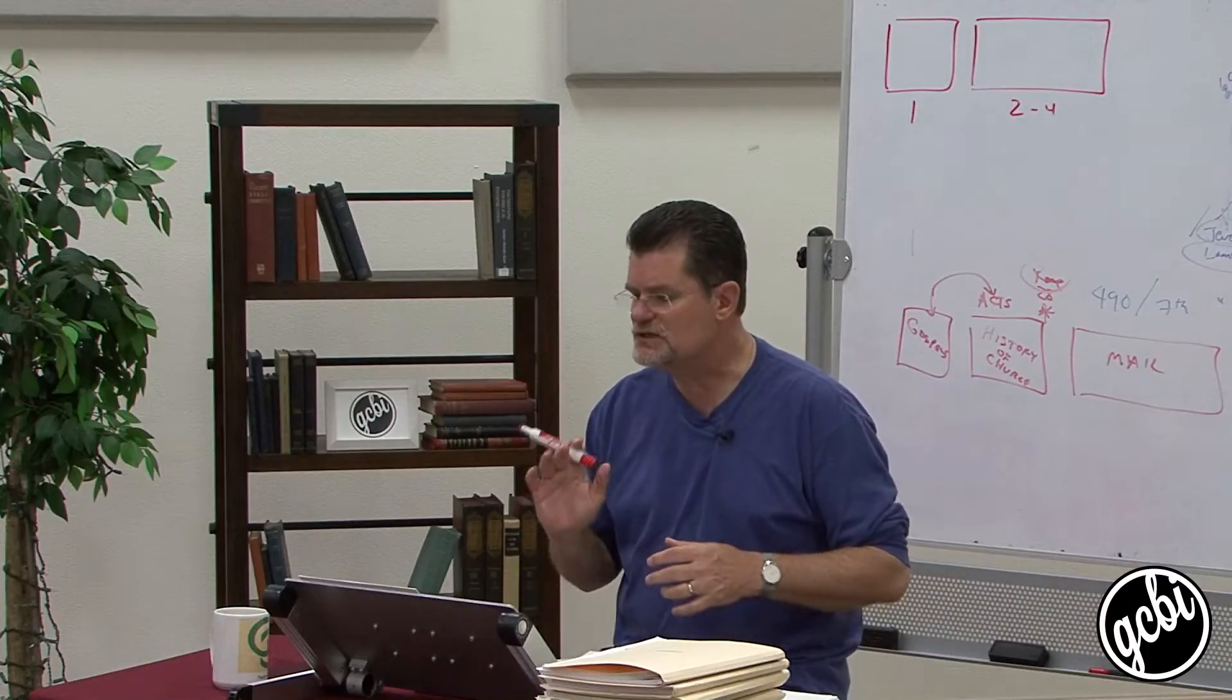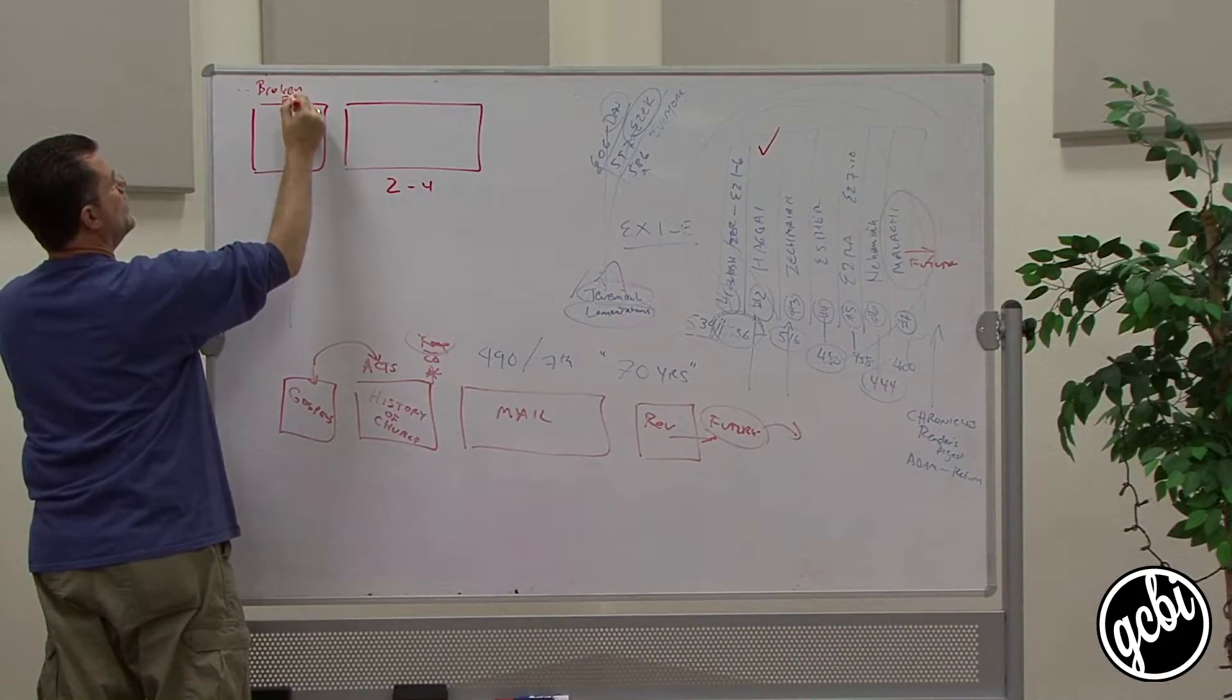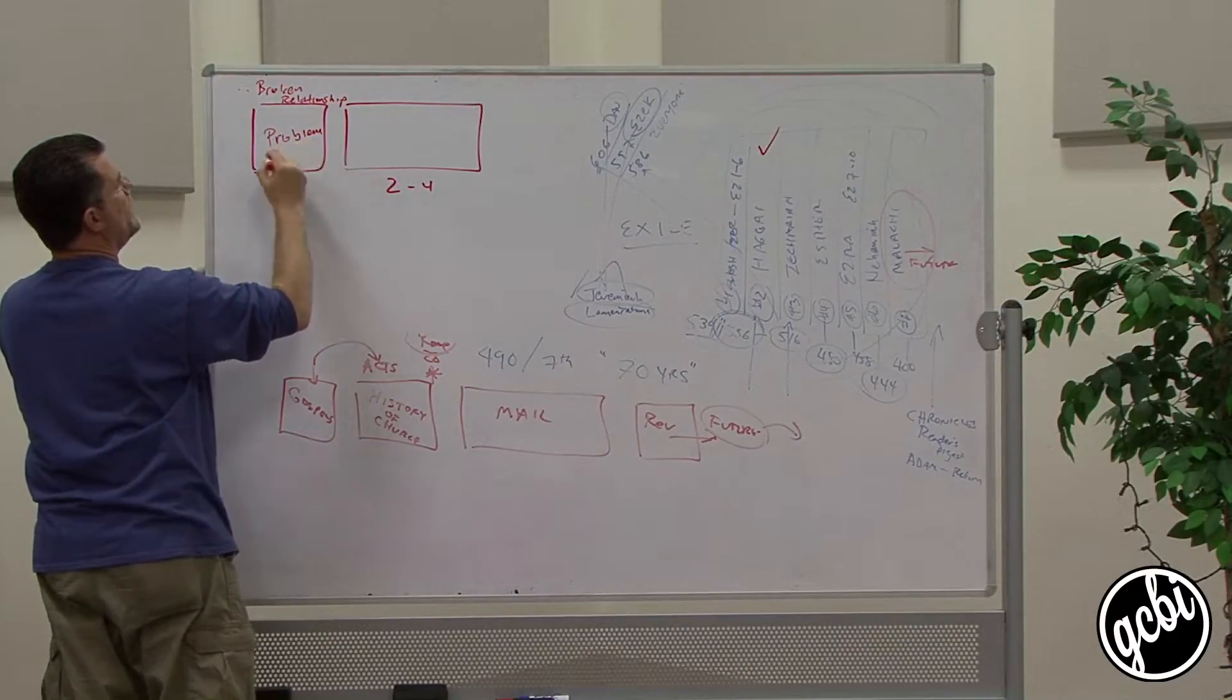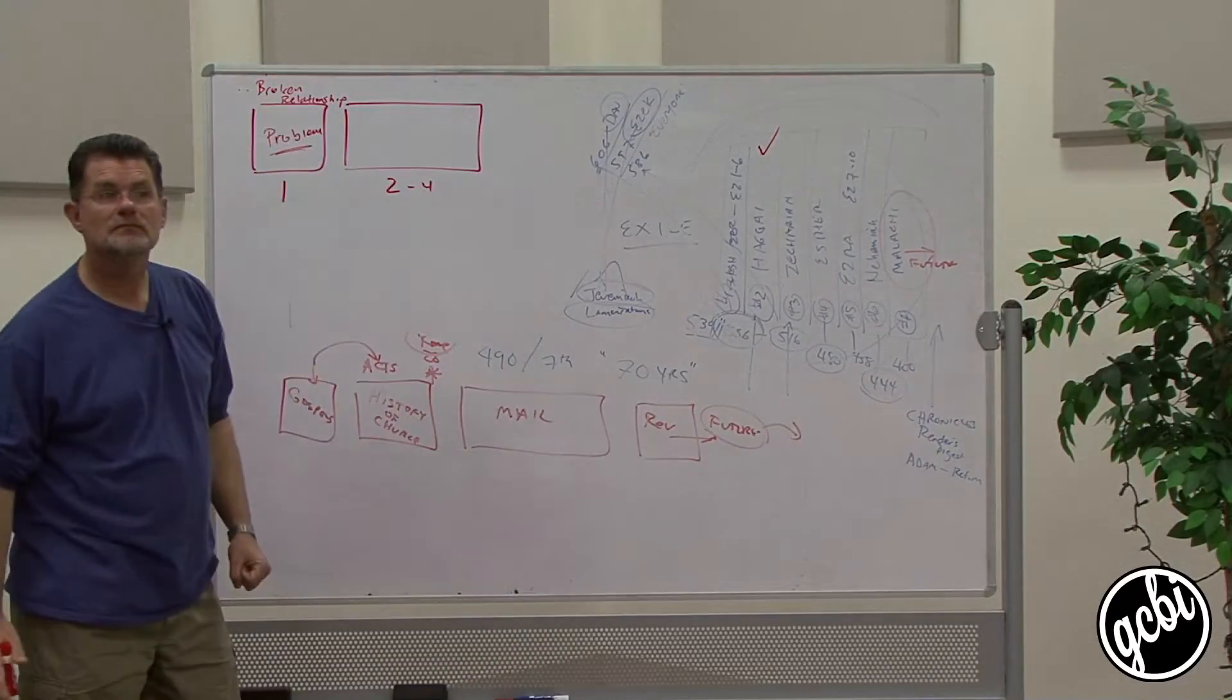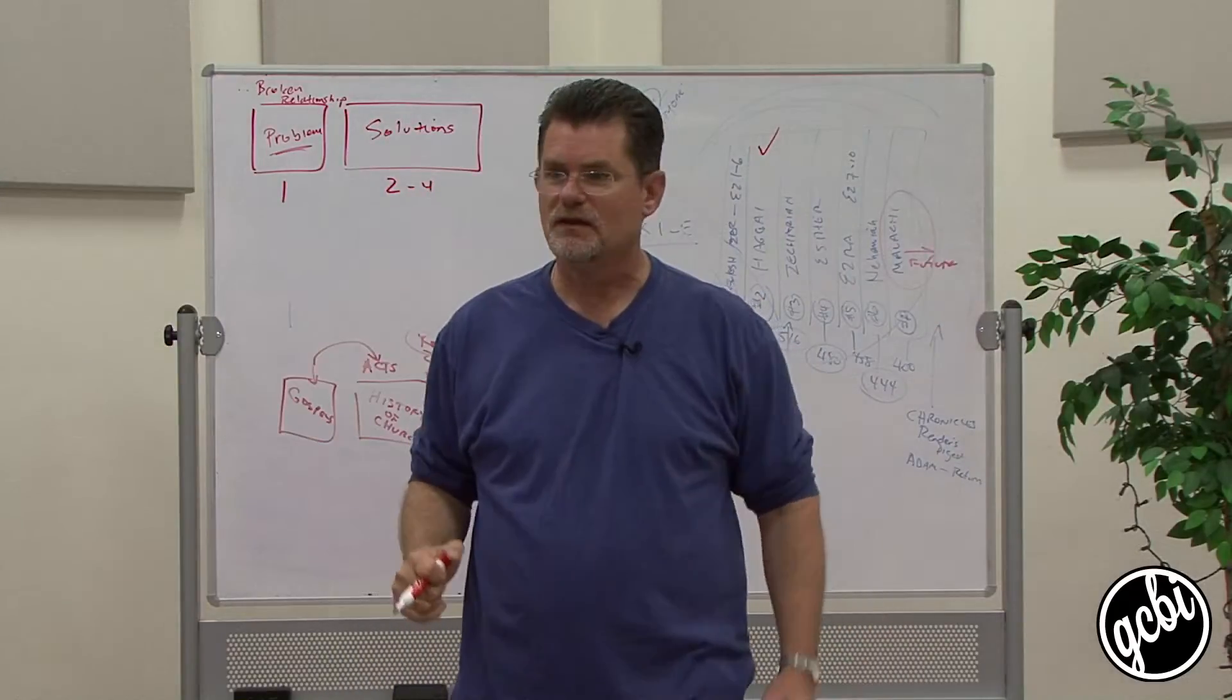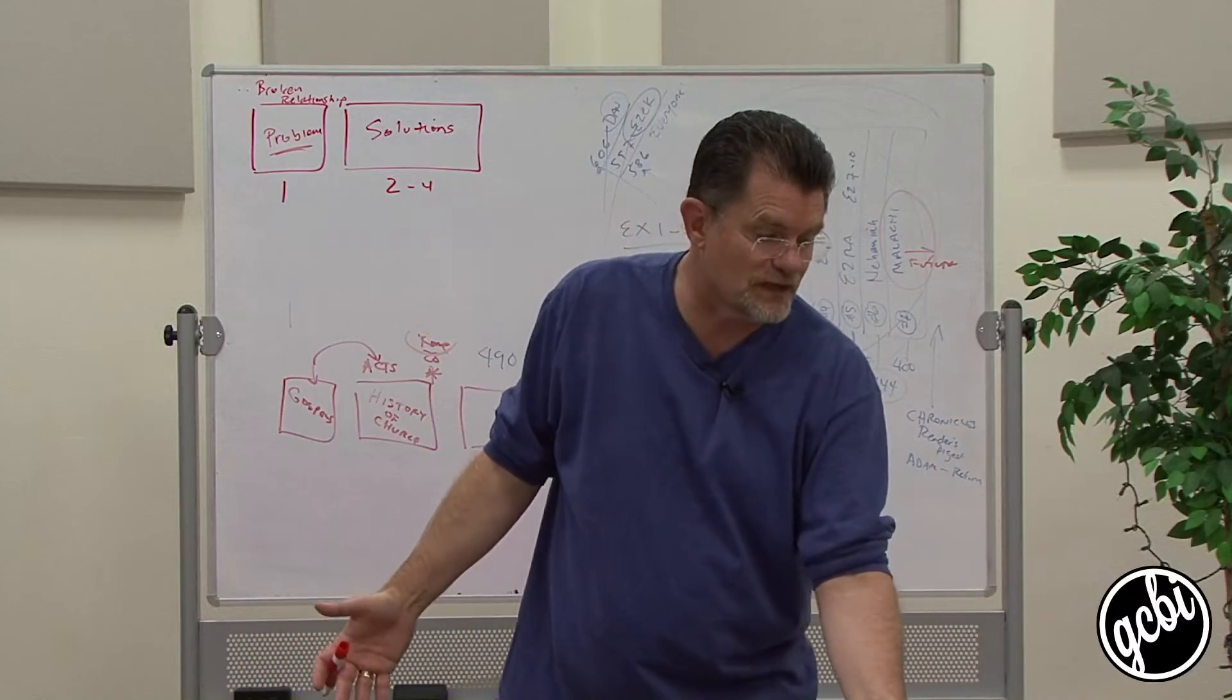I want you to see that the first box describes the problems. This is broken relationship. How did the relationship break and why is it broken? And then, of course, what do you expect to follow the problem? Solutions. We're hoping the Bible is not just going to bring us to the brink of, hey, you got a problem, you sinner, but what fixes it? What mends the relationship?